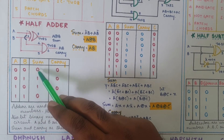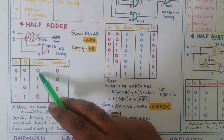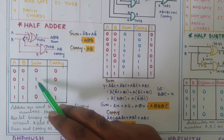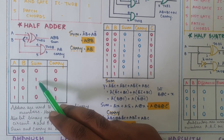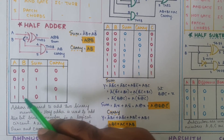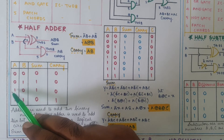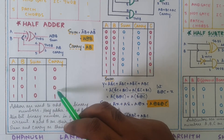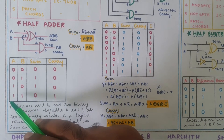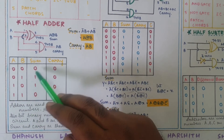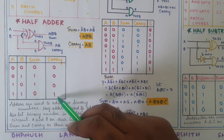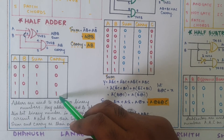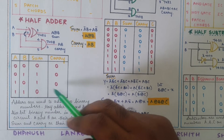0 plus 0: sum is 0 and carry is 0. 0 plus 1: sum is 1 and carry is 0. 1 plus 0: sum is 1 and carry is 0. 1 plus 1: sum is 0 and carry is 1. This is the addition of two-bit numbers — our truth table.